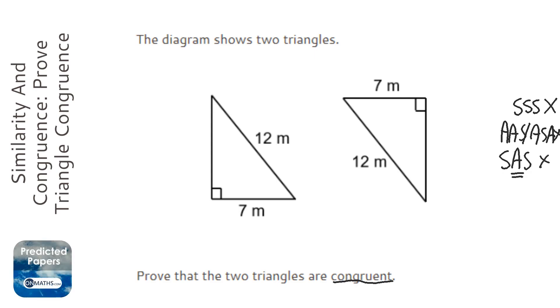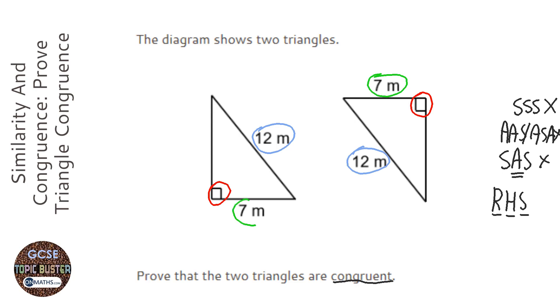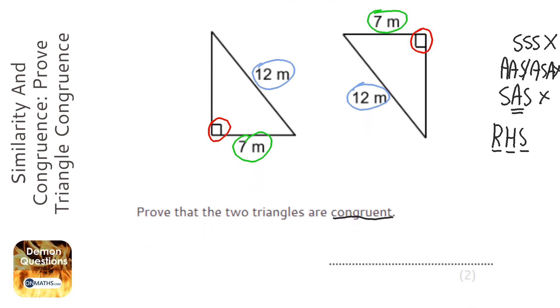The last one is RHS, right angle, hypotenuse, side. So let's have a look and see if we've got that one. Well, we've got the right angle, we've got the hypotenuse, and then we've got another side. All three of those, obviously the right angle is the same, but all three of those are the same. So the right angle is there, the hypotenuse is 12 meters, and then the other side is 7 meters. So the proof that we use for this is just RHS.